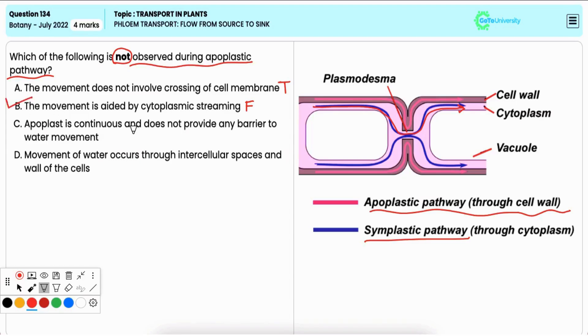Option D: Movement of water occurs through intercellular spaces and walls of the cells. This is also correct.